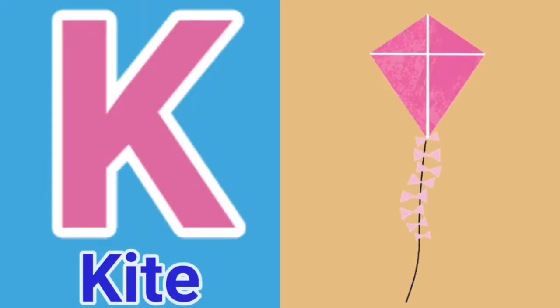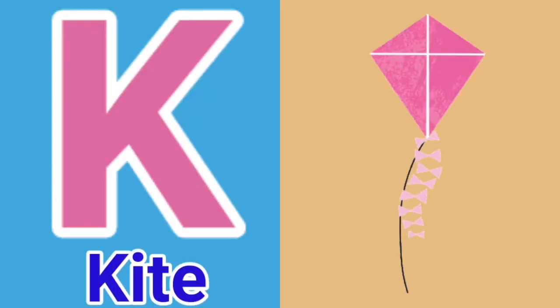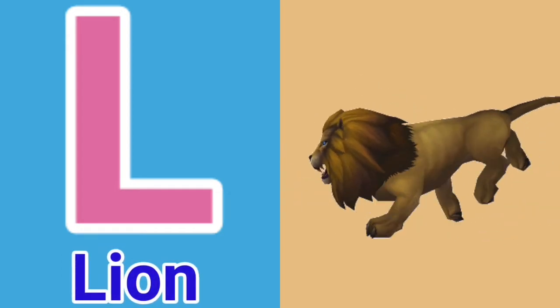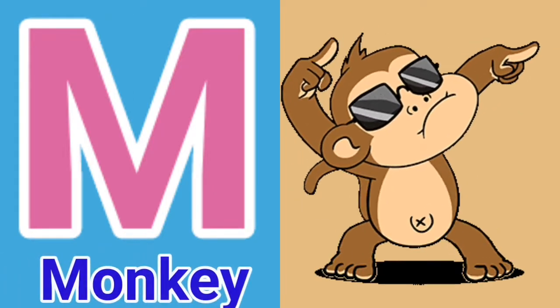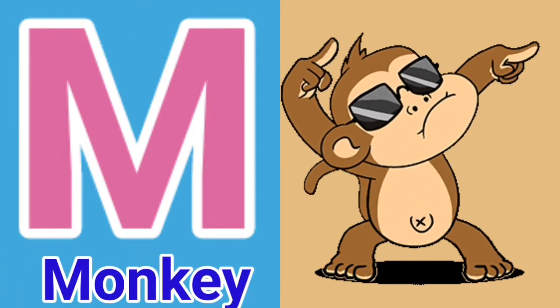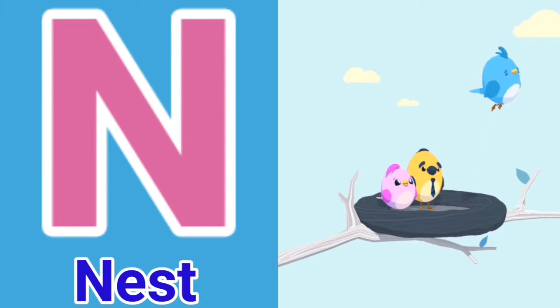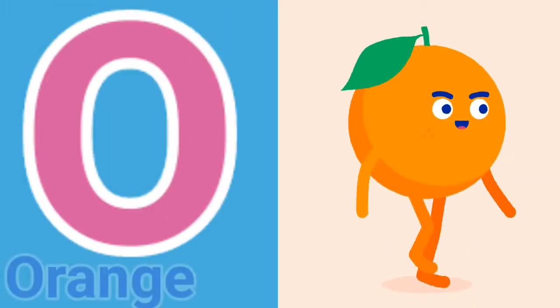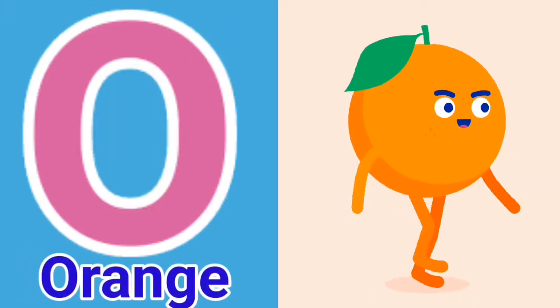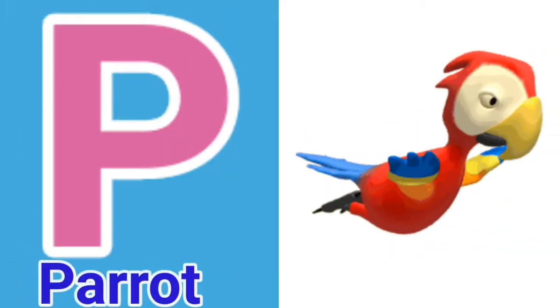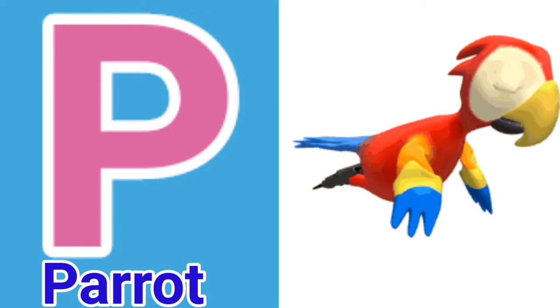K for kite, L for round, M for monkey, N for nest, O for orange, B for parrot.